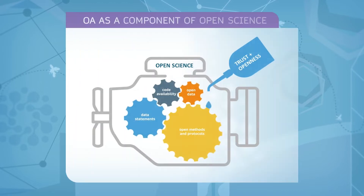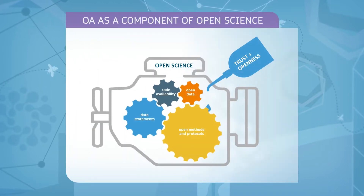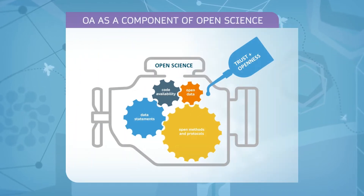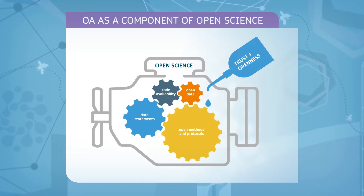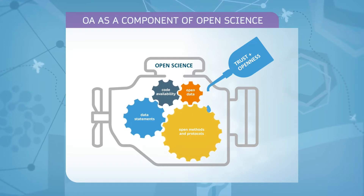When we talk about data being open, we mean accessible in the long term for others to find, to scrutinise and to reuse. Publishing an open access paper is not the end-all on the road to open science. There are many more components: open data, open methods and protocols, code availability and data statements are all part of the goal of having a truly open science.